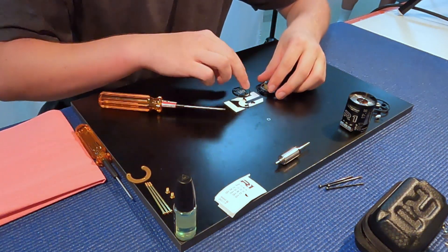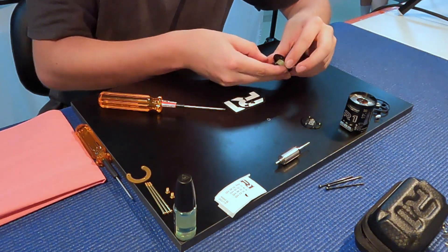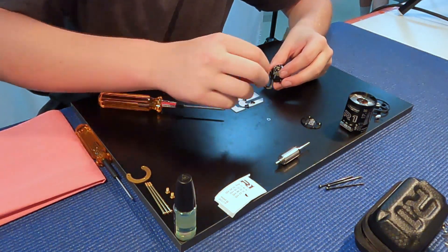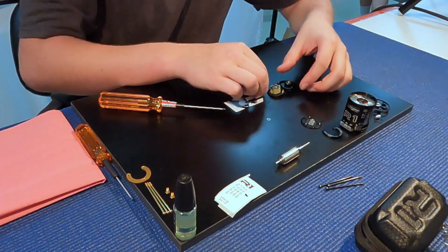And then everything will come apart, so you have the back plate here and then timing ring as well. And then the sensor board will come off also.